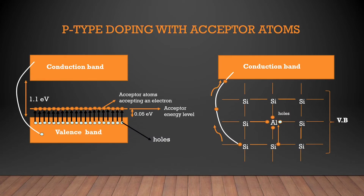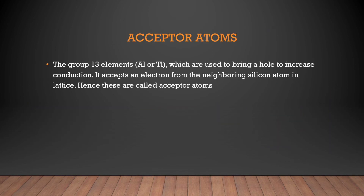The silicon beside it then takes an electron from the next silicon, and a hole is produced there again. In this way, from within a single aluminium atom, holes keep getting generated here. It accepts an electron from silicon — that is why it is called an acceptor atom. So, acceptor atoms: group 13 elements are used to bring a hole to increase conduction. They accept an electron from a neighboring silicon atom in the lattice, hence these are called acceptor atoms.